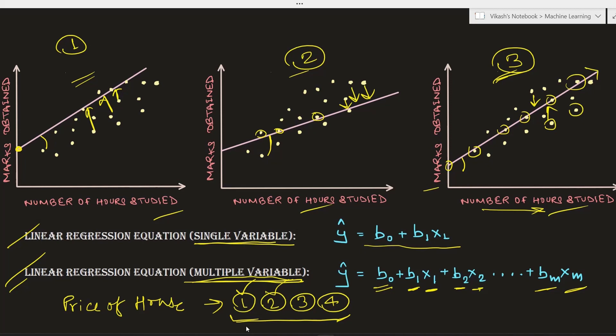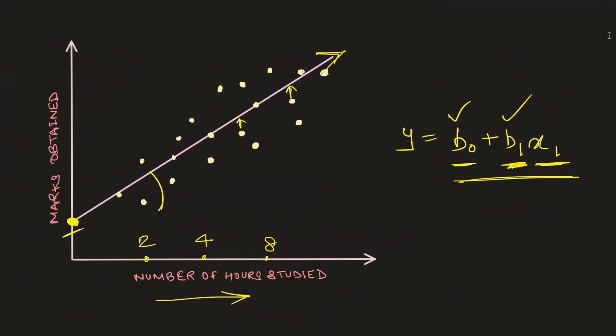So far we have seen a positive relationship between two variables — an independent and a dependent variable. By positive relation, I mean when the value of your independent variable is increasing, the value of your dependent variable is also likely to increase. This is called a positive correlation.